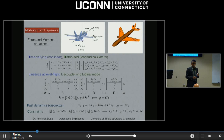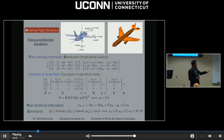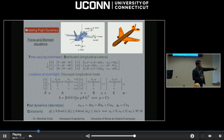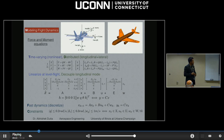This is a continuous model, but in reality we need to discretize it. Since this system has fast dynamics, we discretize at, say, 0.1 seconds or faster. We end up with a discrete-time state-space model: x(k+1) = Ax(k) + Bu(k) + Cw(k), which I will be using from now on.